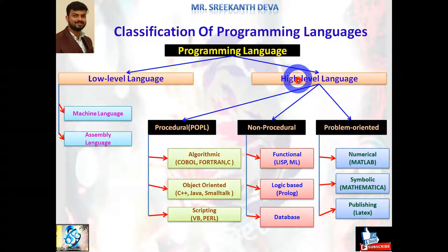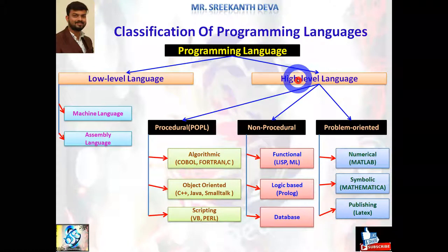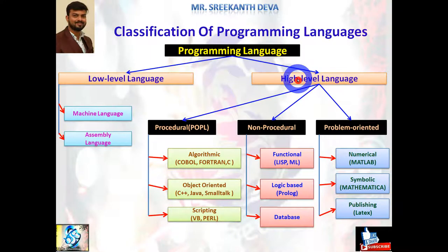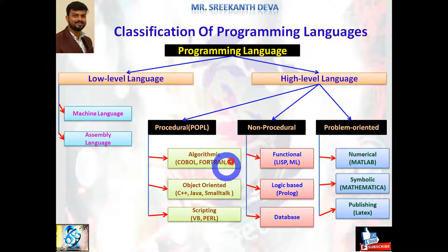A procedural language is a type of computer programming language that specifies a series of well-structured steps and procedures within its programming context to compose a program. It contains a systematic order of statements, functions, and commands to complete a computational task. Best examples are BASIC, C, FORTRAN, and Pascal — these are all procedural languages.